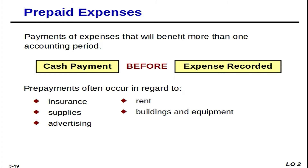Two types of deferrals: prepaid expenses and unearned revenues. For prepaid expenses, it's cash payment before the expense is recorded. As soon as you see the word 'prepaid expenses,' that should automatically mean deferral. Examples include prepaid insurance, supplies, prepaid advertising, prepaid rent, buildings, and equipment.